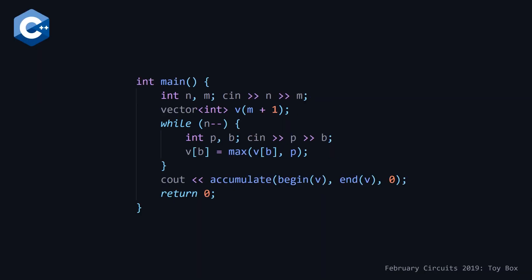Moving on to our C++ solution, very similar to the Python and Java solutions. We read in N and M, then declare a vector dimensioned to have M plus one elements. Because we don't have as strong typing in C++, we can just go while N--, without needing the does-not-equal-zero. We read in P and B, and similar to both the Python and Java solutions, we set the value for our box to be the maximum of our current price P and the current maximum we've seen. Similar to Python, we have a sum function in C++ — it's called accumulate. In C++17 it would be called reduce, but we don't have C++17 on Hacker Earth. We initialize our sum to zero, loop through our whole vector, sum up the elements, and return it.